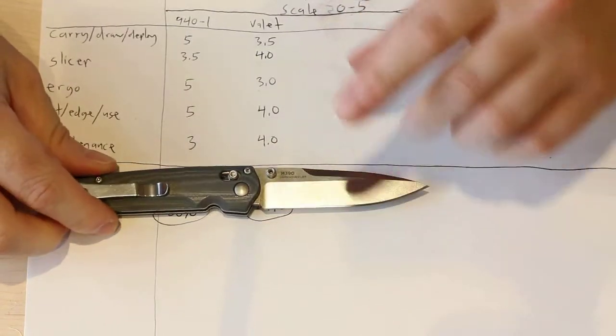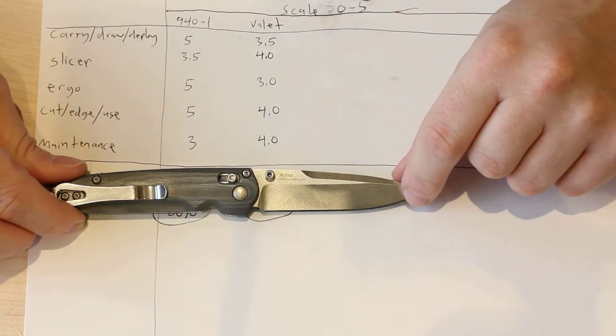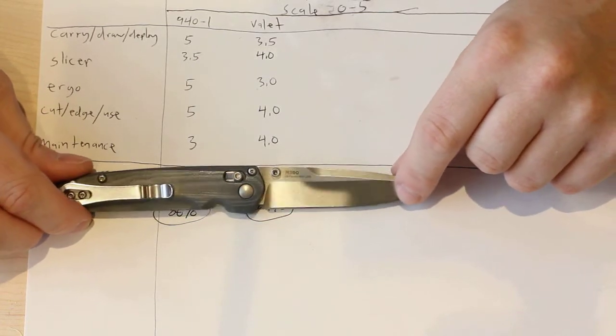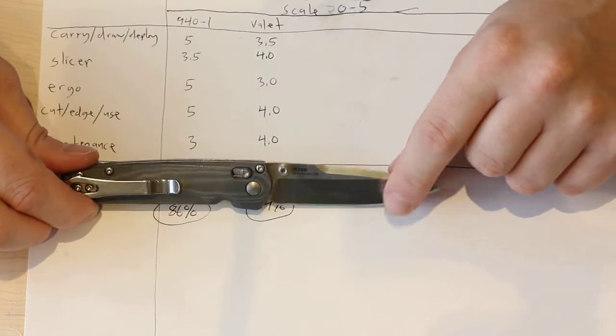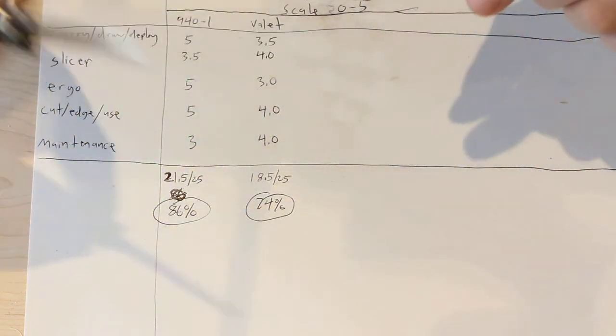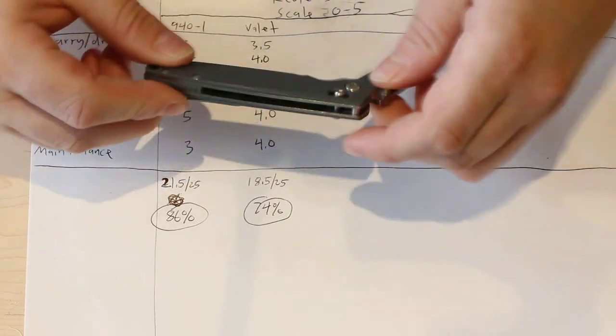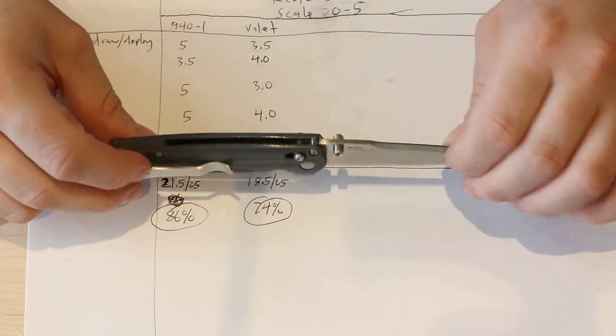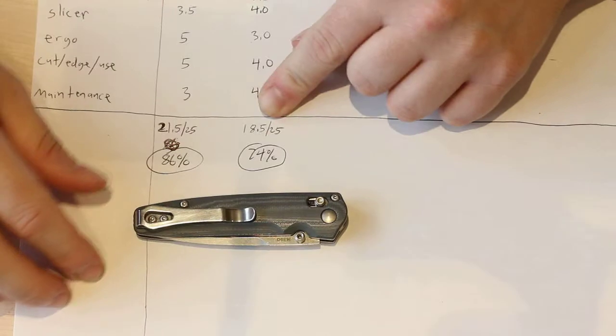And then maintenance, I give this the higher mark because the M390 steel is not as hard to sharpen as I thought it would be—significantly easier than S90V and actually about the same as S30V, if not slightly easier. And also because of the open handle design, that just makes it very easy to keep clean, keep it lint free, and keep it oiled and lubricated. So overall 18.5 out of 25 is what I rank it. That comes out to 74% which is a very high rating, better than average. Benchmade 940 came out with 86 which is my highest rated knife so far.